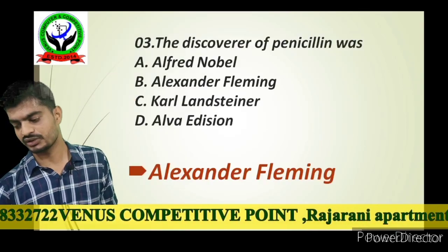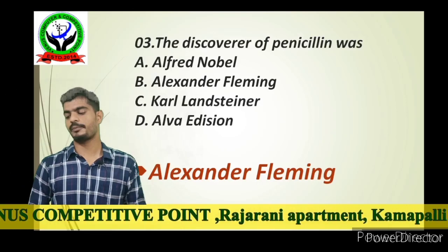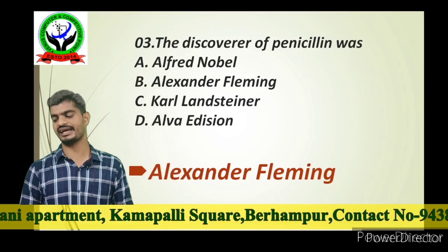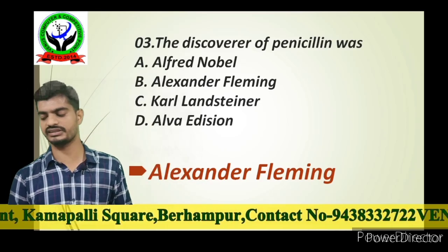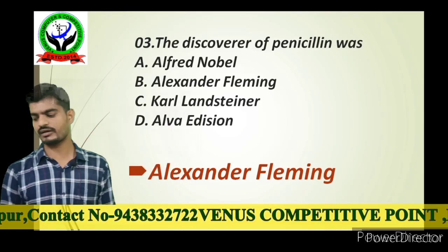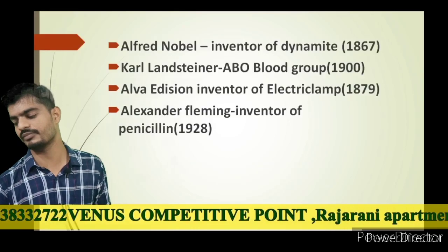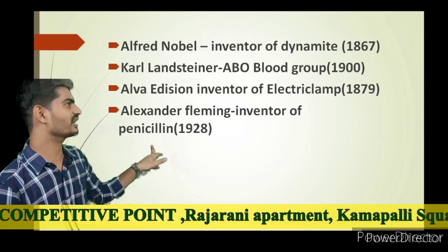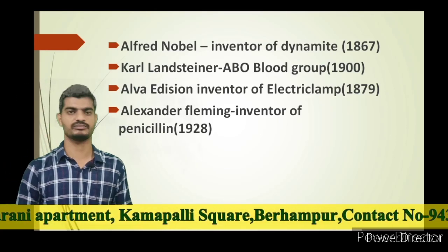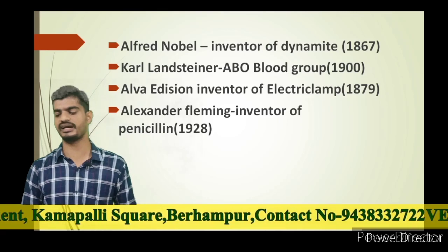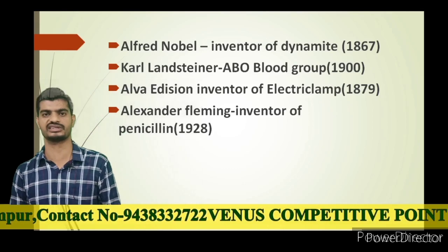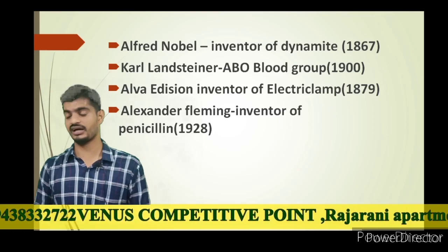Next question, friends: who is the discoverer of penicillin? The options are Alfred Nobel, Alexander Fleming, Landsteiner, and Alva Edison. The answer is Alexander Fleming, inventor of penicillin. Alfred Nobel invented dynamite in the 1860s. Karl Landsteiner discovered the ABO blood groups in 1900.